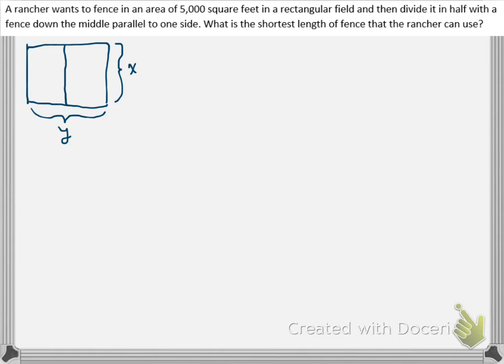Now, the 5,000 square feet is an area, so I can create a constraint from that. That's going to be x times y equals 5,000 square feet. So that's my constraint.